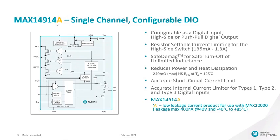So we have the MAX14914A, which is a very low leakage digital output. It can be configured either as digital input or high-side digital output or push-pull digital output. The current limit is settable between 130 milliamps up to 1.3 amps.